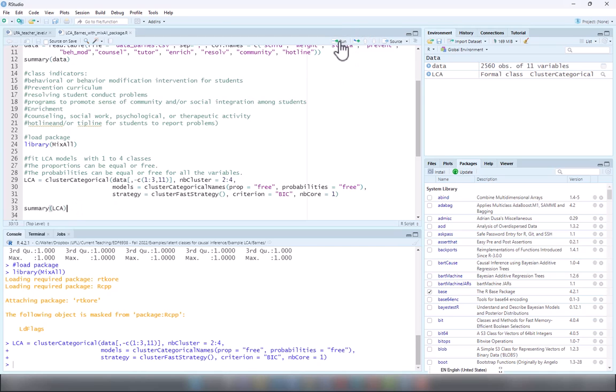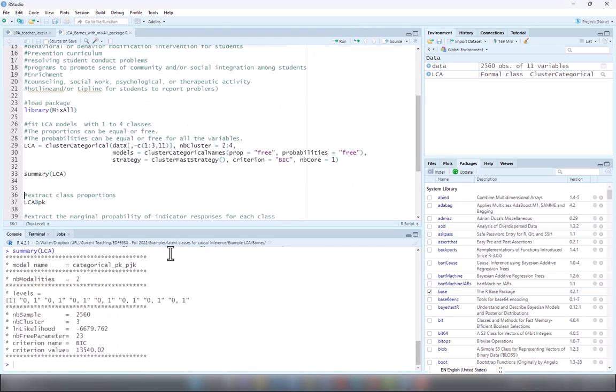Let's take a look at the results. These first results are not super informative. It's just showing the log likelihood and sample size is 2,560.